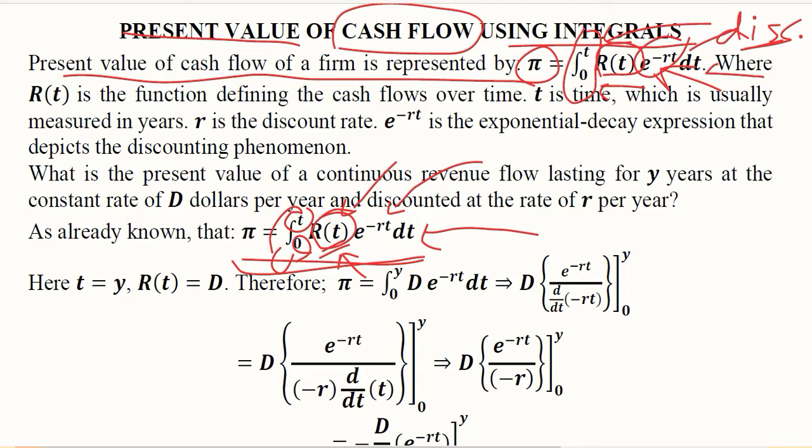Now resuming the sequence of the statement, R(t) is the function defining the cash flow over time, that is the returns. t is time, which is usually measured in years, because the time preference usually is effective when it comes to years. There is a certain time period which is substantial, during which our preference for the future returns can decline. If it is a short time span, for example a few days or a few weeks, it does not amount to any substantial decline in the value of that certain resource. An year is a suitable unit of time for allowing the time preference rate to prevail and the discounting will happen. That discounting rate is represented with r and e^(-rt) is the exponential decay term. It depicts the discounting phenomenon.